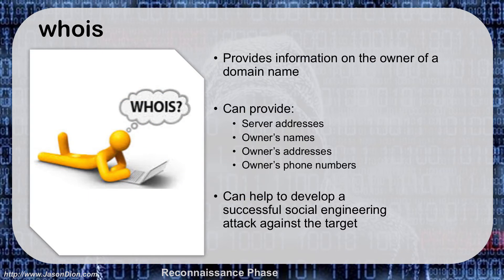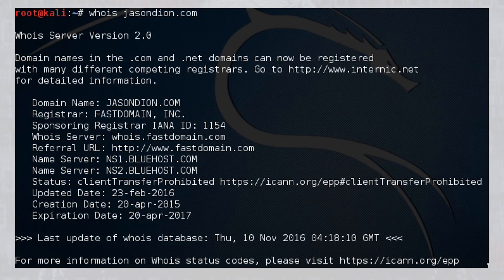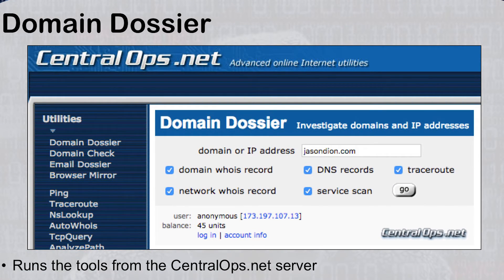The next tool is Whois, which provides information on the domain name owner — things like the server address, owner's name, physical address, phone numbers, and contact information. This helps us develop a successful social engineering attack. For example, knowing their web hosting provider lets us craft a phishing email saying the domain is about to expire and to click here to renew. Running whois jasondion.com gives back name servers and basic information including the expiration date. For more details, we can go to internic.net or to Central Ops, which has a Domain Dossier providing Whois records, DNS records, traceroute, and even a service scan — all from their server.